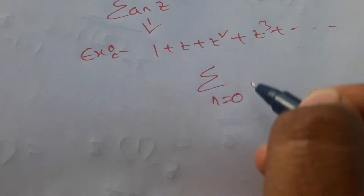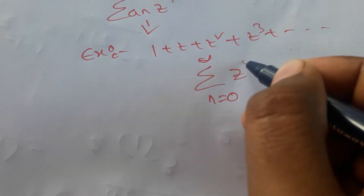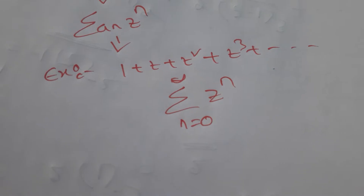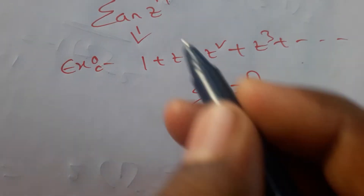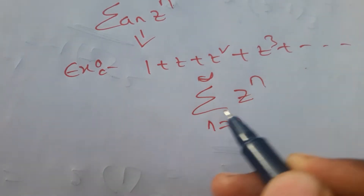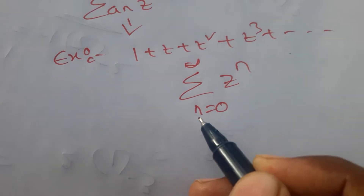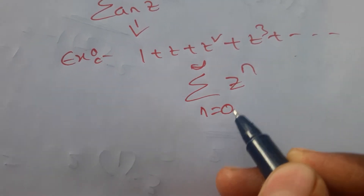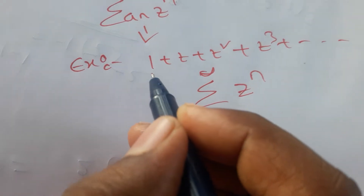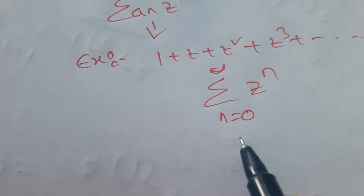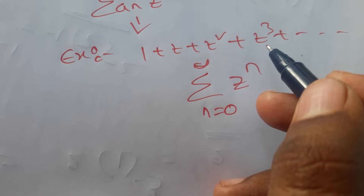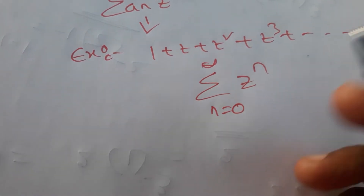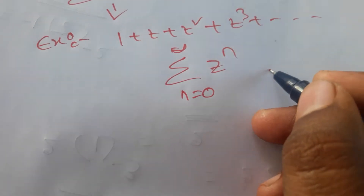This example series can be written as summation from n=0 to infinity of z^n. Summation means instead of writing all these terms separately, we use summation notation. Here n goes from 0 to infinity, meaning in the first term n=0, next term n=1, next n=2, then n=3, and this process goes on.